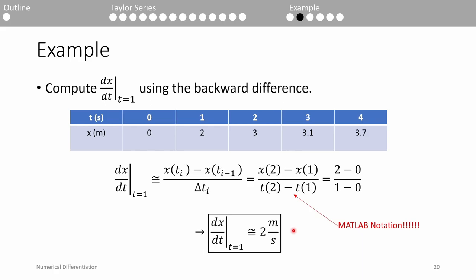Now we want to compute the backward difference at t equals 1. The backward difference requires the point behind t equals 1, aka the (0, 0) data point. This means we do x of 2 minus x of 1 all over t of 2 minus t of 1, which returns 2 meters per second after we plug and chug.